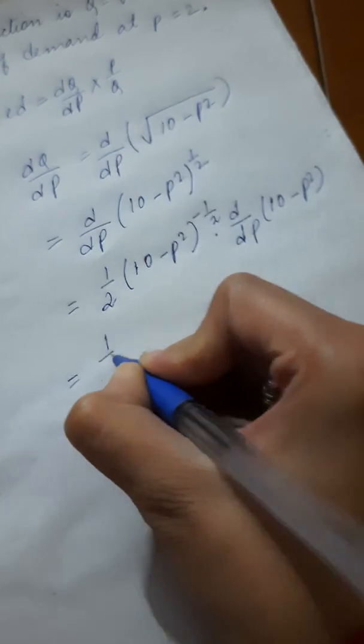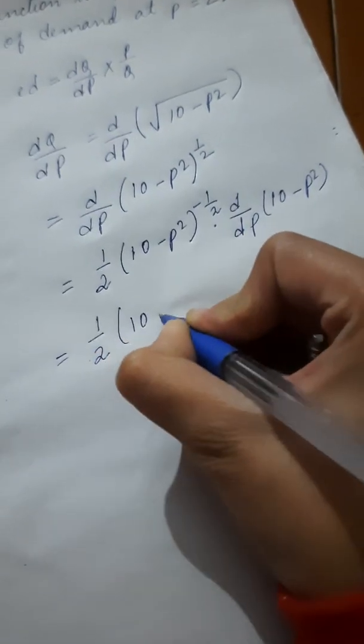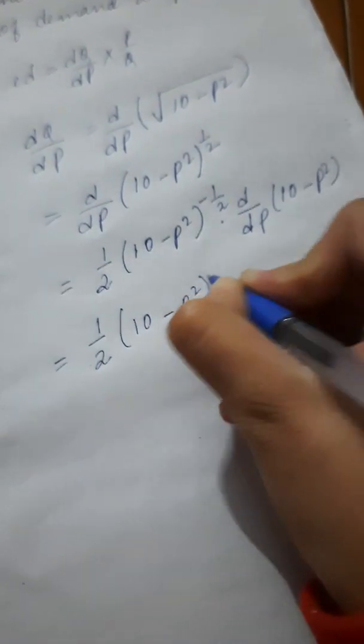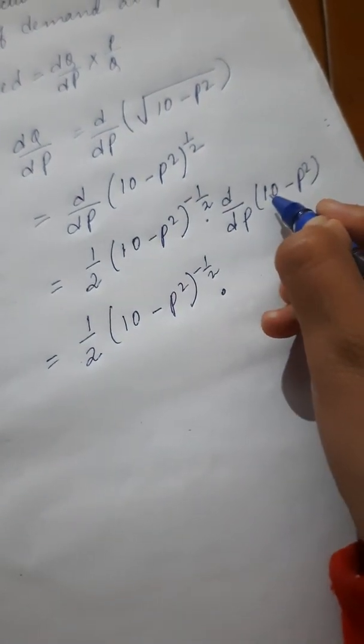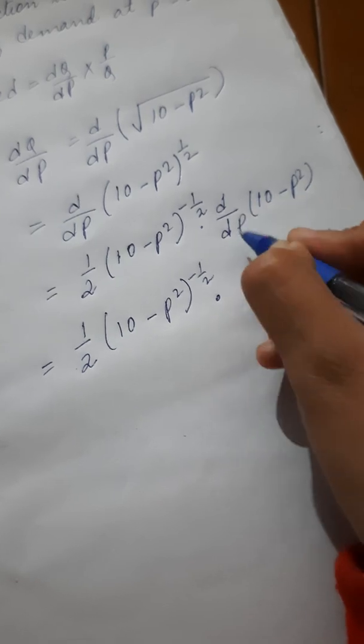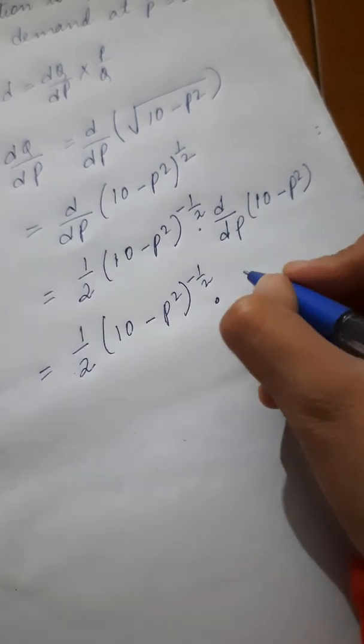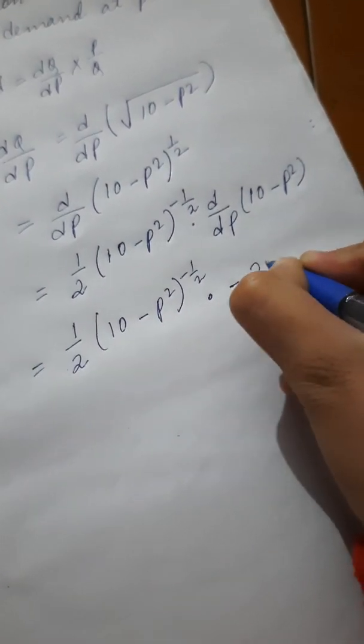So, 1 by 2 times 10 minus p squared to the power minus half, into d by dp. d by dp of 10 will be 0, and d by dp of minus p squared will be minus 2p.